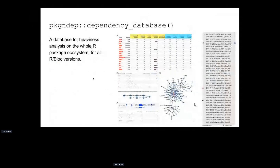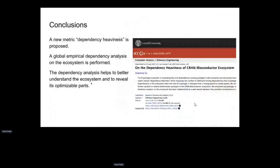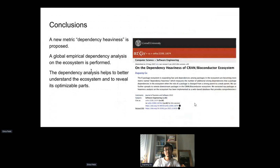If nlptr can remove its strong dependency on testthat, more than 16,000 additional dependencies could be reduced from the ecosystem. There is a function called dependency_database() from the pkg_ndp package, which includes a database for dependency heaviness analysis for all packages across many R and Bioconductor versions. In conclusion, a new metric — dependency heaviness — is proposed, a global empirical dependency analysis was performed on the whole ecosystem, and the study has been published in a journal and is freely available on arXiv.